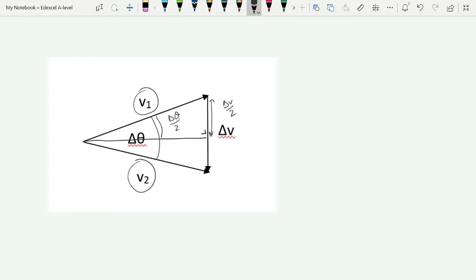Now we can apply our trigonometry here. We can say that sine delta theta over 2 is equal to delta V divided by 2 divided by the original velocity. As this is a numerical value of that velocity, it can be either V1 or V2, so we'll just call it V.